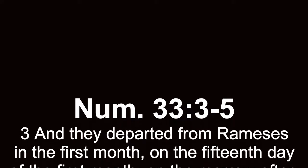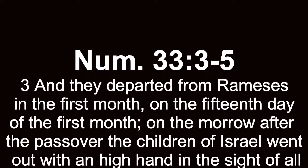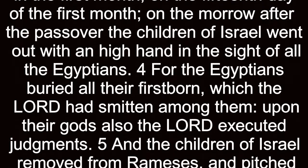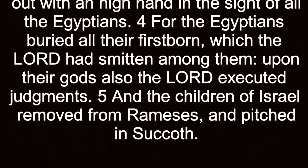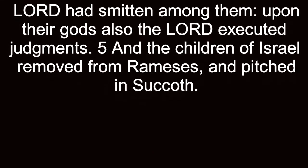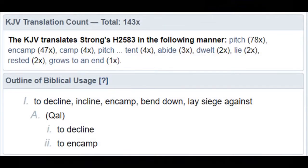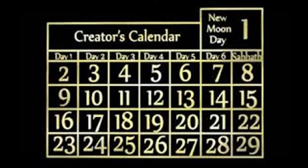Numbers chapter 33 verses 3 through 5: 'They departed from Rameses in the first month, on the 15th day of the first month — on the morrow after the Passover — the children of Israel went out with a high hand in the sight of all the Egyptians.' The Egyptians buried all their firstborn which Yahweh had smitten; Yahweh executed judgments. And the children of Israel were removed from Rameses and pitched in Sukkot. Which day did they pitch in Sukkot? Looking up 'pitch' — Hebrew H2583 — to incline, specifically to pitch a tent, to encamp, rest in a tent. They did this on the 15th day because it was a Sabbath day.